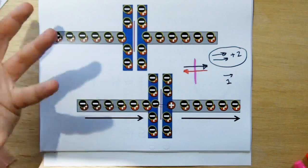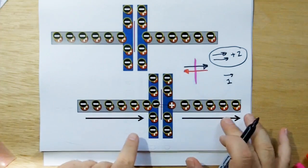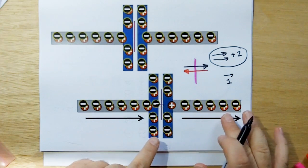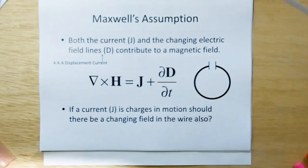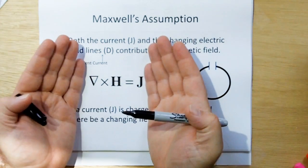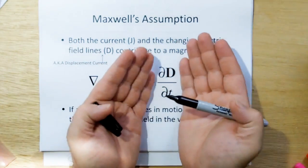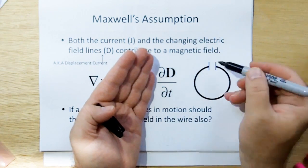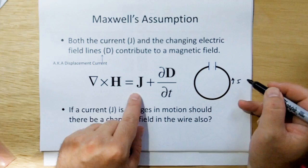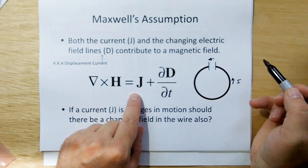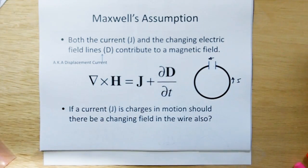So then what Maxwell deduced is he came up with that the current in the wire, the amount of charge that moves is similar to the change in flux lines across the gap. And therefore, we have the magnetic field contributed by the current in the wire, and then we have the magnetic field contributed by the change in electric flux across the gap. And so it doesn't matter where you are if you have the current here, which is represented by J here, and the changing electric field across the gap. It doesn't matter where you are in the loop, you get the same contribution in magnetic field.